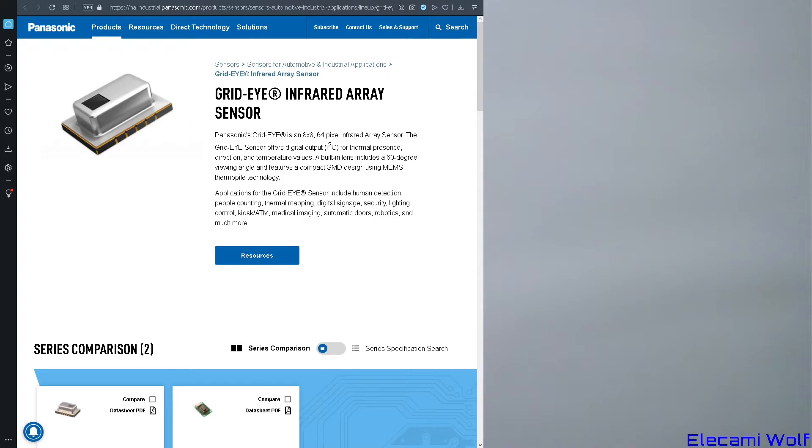Panasonic created GridEye, an 8x8 thermal sensor, to increase the efficiency of their air conditioners. It allows them to sense if there is someone in the room and where they are located.